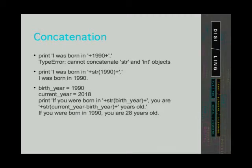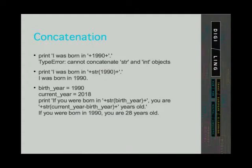Look at the last example on the slide. We have a variable with information about the birth year — it is an integer data type. We have another variable with information about the current year, also an integer data type. We can now print a message using concatenation where it says 'if you were born in' and then refer to the birth year and convert it to a string. Then 'You are' and subtract the birth year from the current year and convert it to a string. We can change the birth years and the current years and get the age of the person without having to do the division ourselves.